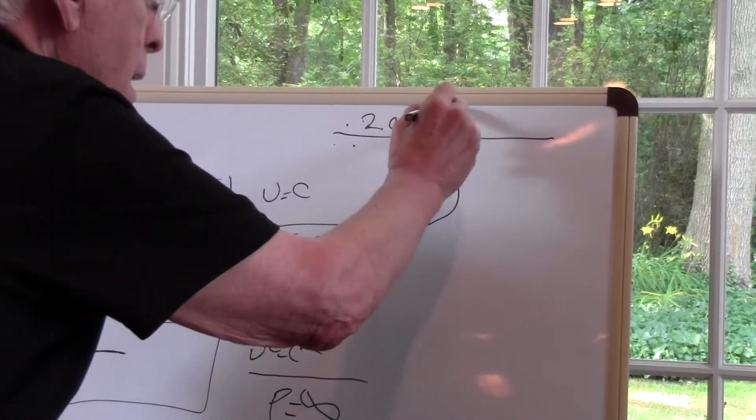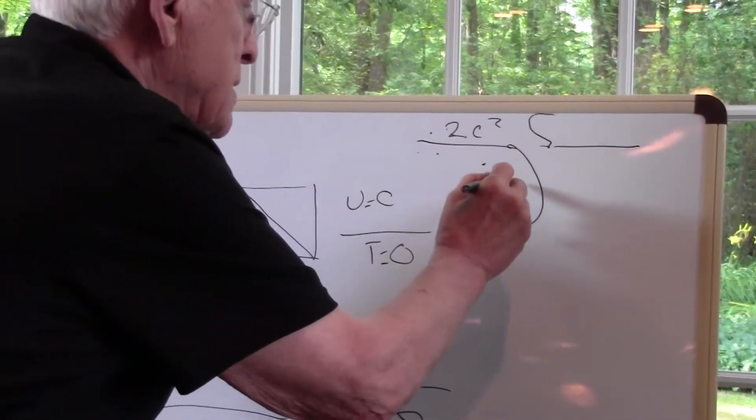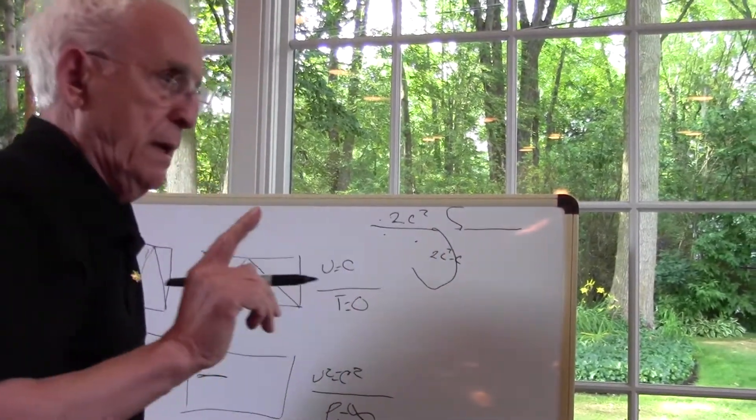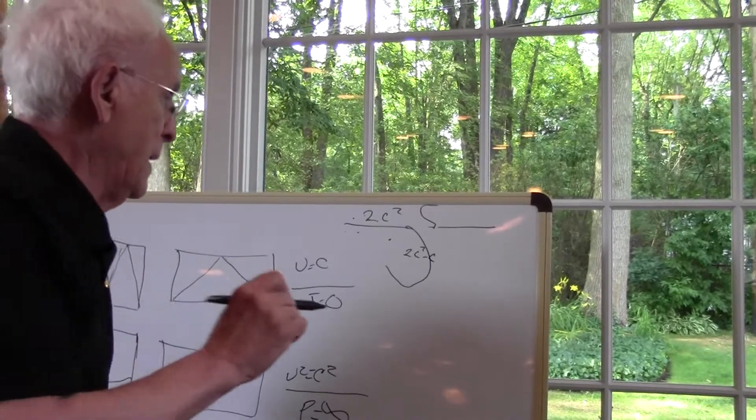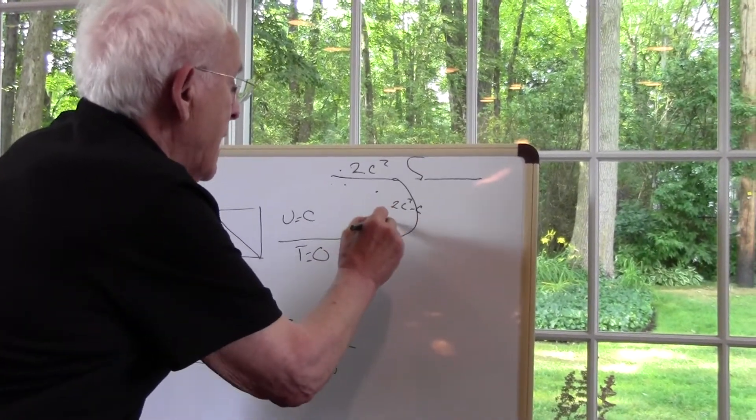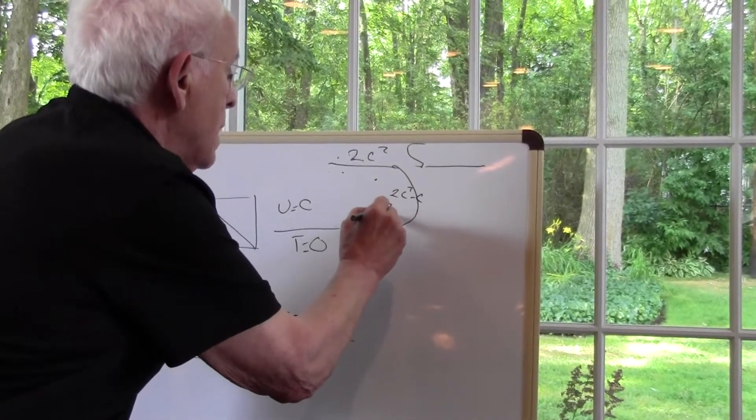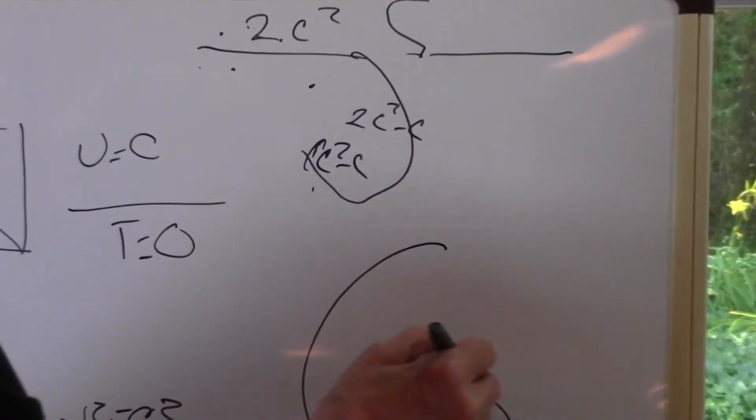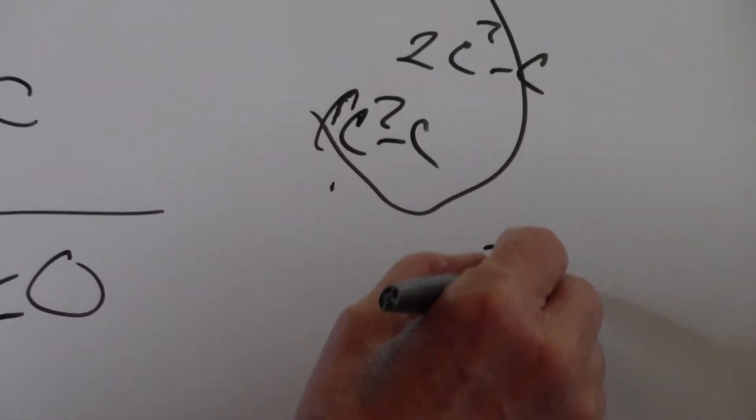Once they collide, now they go two C squared minus one C. One speed of light. As it slows down, and you get rid of one of that, it becomes C squared minus C. Because you're in this ball now. Now you're at C squared minus C.